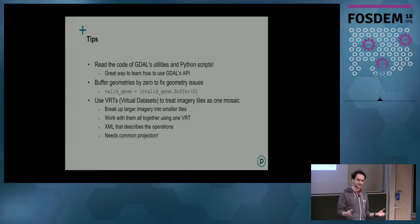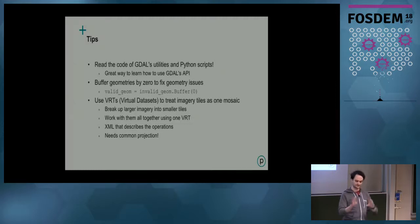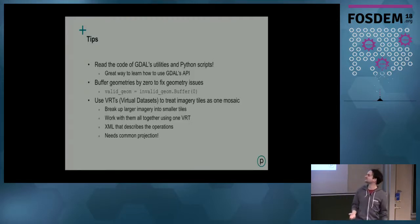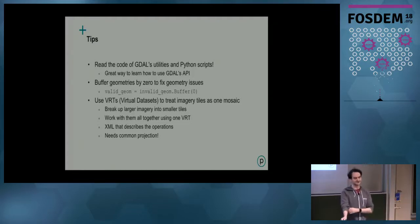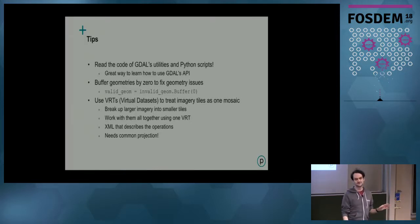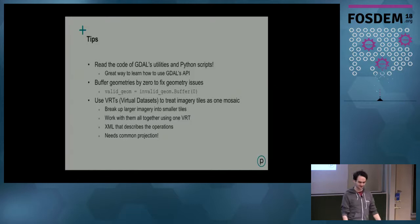Also, if you're working with geometries you get from random places or that you're generating, sometimes — especially around the dateline — you get weird issues where the geometry doesn't validate anymore. You can just apply a zero buffer on it, and OGR kind of magically makes it a valid geometry. Really helpful whenever you're having weird problems with geometries — just apply a buffer with actually no buffer and that makes it work.